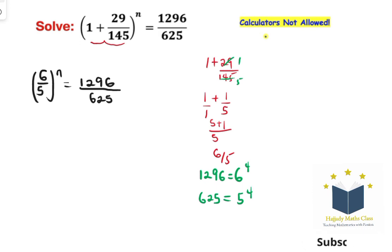So writing that, I am going to have 6 over 5 to the power of n equals 6 to the power of 4 over 5 to the power of 4.